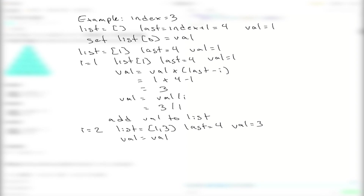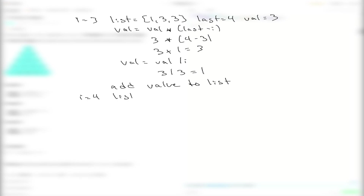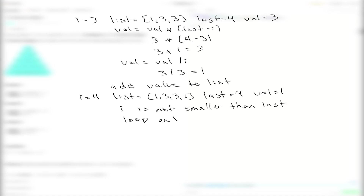For i equals 3: value equals 3 times (4 minus 3) = 3 times 1 = 3, then 3 divided by 3 = 1. We add 1 to the list. Now i equals 4, our list is [1, 3, 3, 1], and i is no longer less than last so the loop ends. We return that list. That one single calculation can literally determine any row we want.